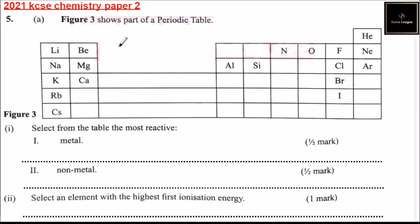Question 5, Part A. Figure 3 shows part of a periodic table. We have some elements found in the periodic table in several groups.